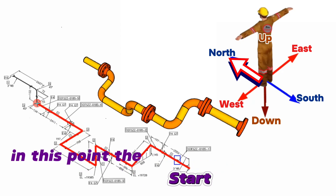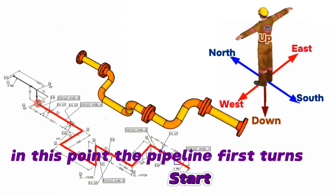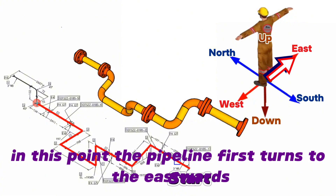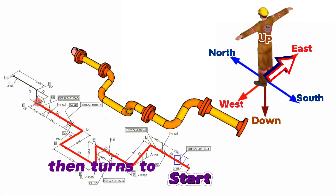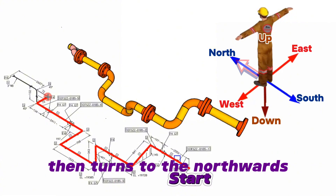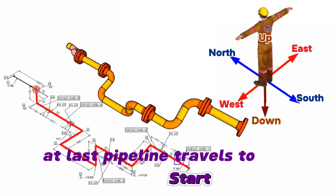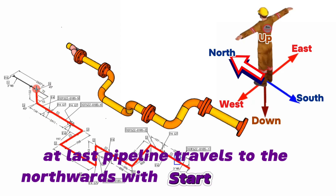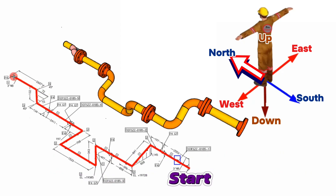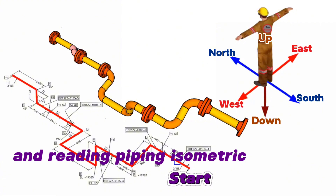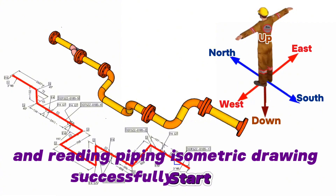At this point the pipeline turns eastwards with a 90-degree elbow again, then travels northwards. At the next point the pipeline first turns eastwards, then turns northwards. Finally, the pipeline travels northwards with a 45-degree elbow. Reading the piping isometric drawing is successfully completed.